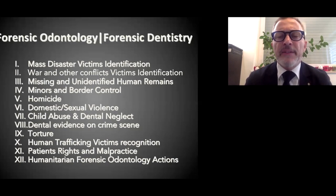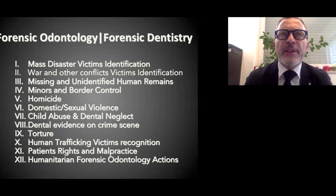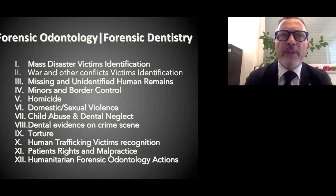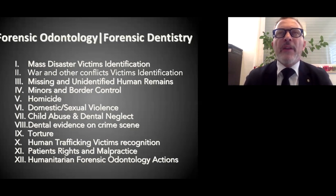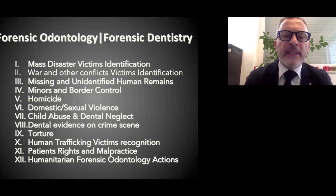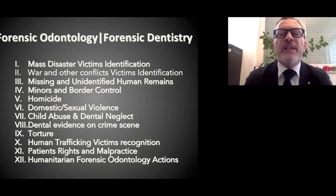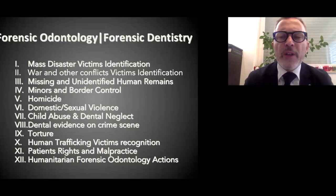This is the field of missing and unidentified human remains. We can also be involved when we need to assess the age of minors who cross borders. In Italy, for example, we have many migrants coming from North Africa and the east who try to cross European borders — all of them without documents, some of them claiming to be minors. These are what we call unaccompanied minor migrants, and they need to be assessed for age. We can use methods applied to the development and growth of the roots of the wisdom tooth to assess whether a person is a minor or an adult.